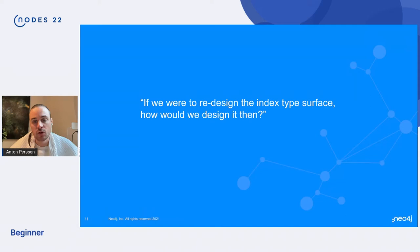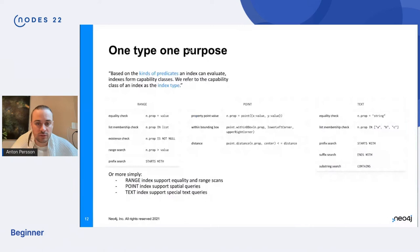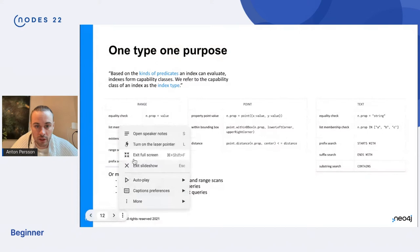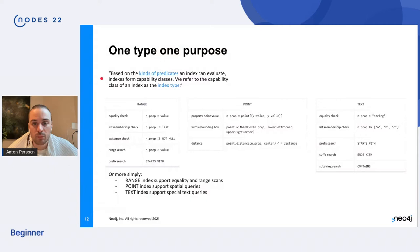Okay. So if we were to redesign index types, the index type surface, how would we design it then? That was the kind of question that we asked when we started working on this. And I think this sentence from like one of our internal documents describes it quite well. So based on the kinds of predicates that an index can evaluate, indexes form capability classes. And we refer to the capability class of an index as the index type. So the index type in itself describes what predicates does the index support.